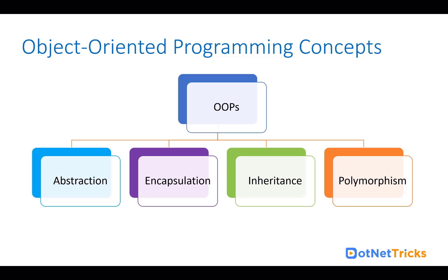Let's have a look at object-oriented programming concepts. In object-oriented programming, we have mainly four concepts. The first one is abstraction, the second one is encapsulation, the third one is inheritance, and the fourth one is polymorphism.